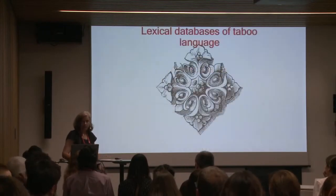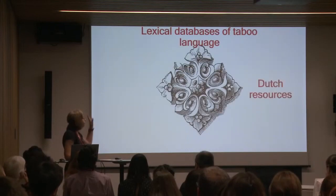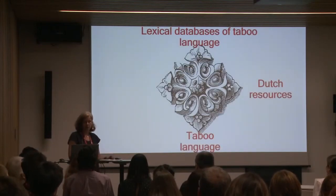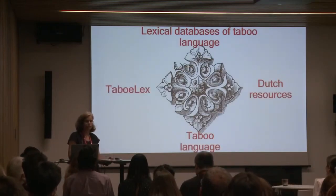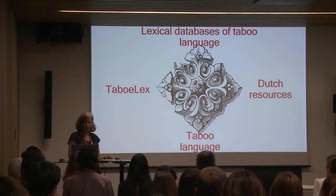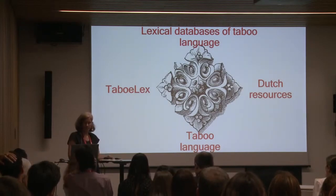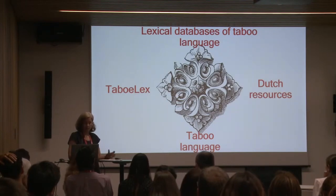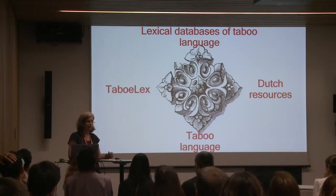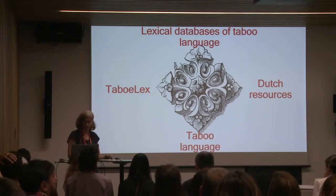The outline of the talk is as follows. First, we'll start by describing what we mean by a lexical database of taboo language and what are possible applications for such a database, why it's necessary. Then we turn to Dutch resources that exist. And then we come to the main part of the presentation — how we want to model taboo language in our lexical database. We conclude with a brief outlook at the current status of the project.